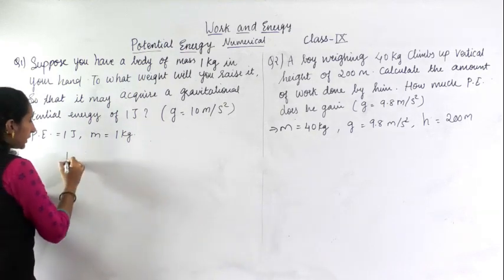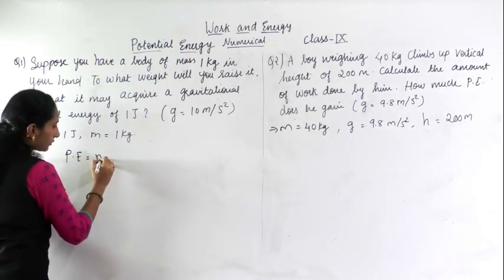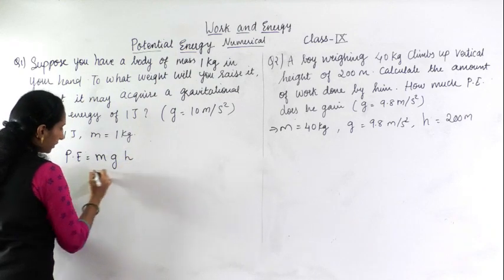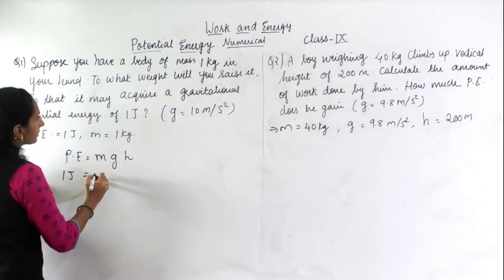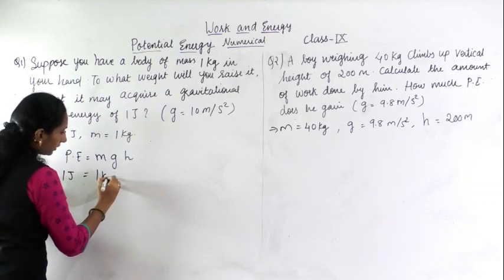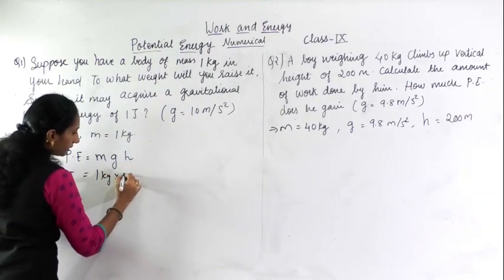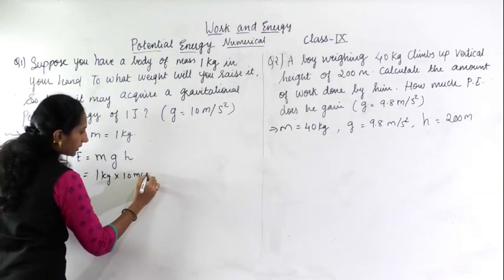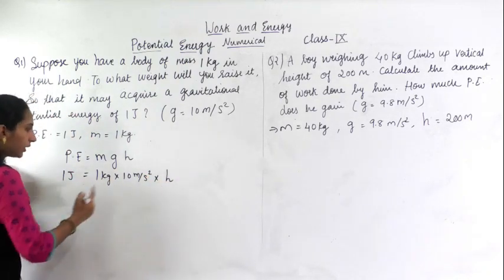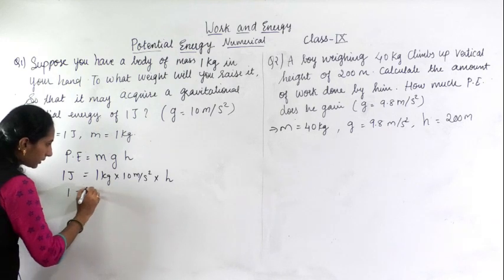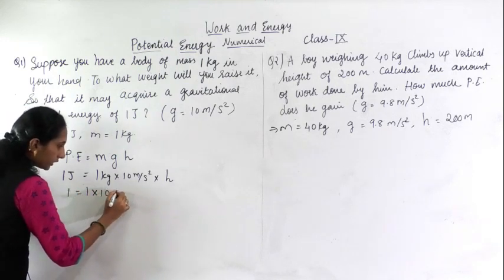What you have to find? You will use the same formula: potential energy equals mgh. Here potential energy is given 1 joule, mass is given 1 kg, g is given 10 meters per second square, and you have to find the height. Without units I will write this: 1 equals 1 into 10 into h.